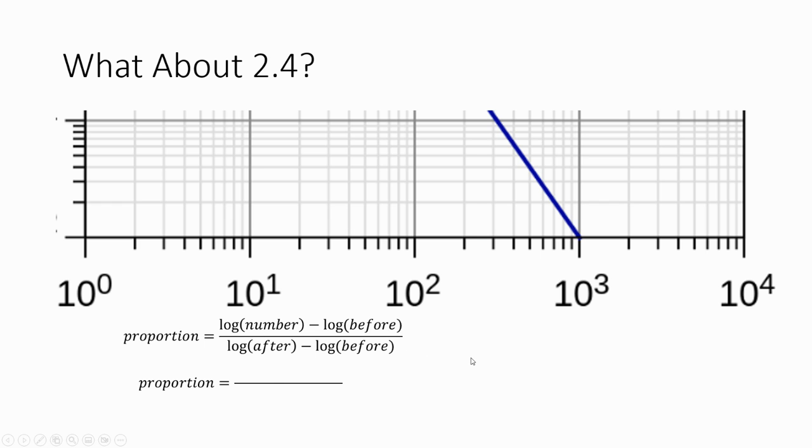So let's look at it in practice. So we're starting with the log of the number we're interested in. So log 2.4. Subtract the log before. So we're looking at this 10 to the power of 0, which is 1. So subtract log of 1. Then the bit at the end of the section we're interested in is 10 to the power of 1. So that's log of 10. Subtract the log before. That's going to be log 1. And we get this thing that the proportion is coming out roughly as 0.38. So that means if we start here and we define this distance to be 1, we need to go 38% of the way. So we have to go 0.38 of this total. And so you would measure out that fraction and that would be the point that corresponds to 2.4.